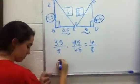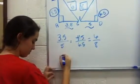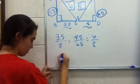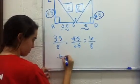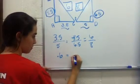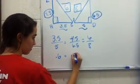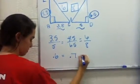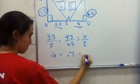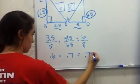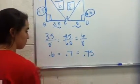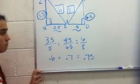Now, you divide each of the proportions and see what they equal out to. And if all the proportions are equal, then they're similar. If they don't, then the triangles are not similar. And in this case, the triangles are not similar.